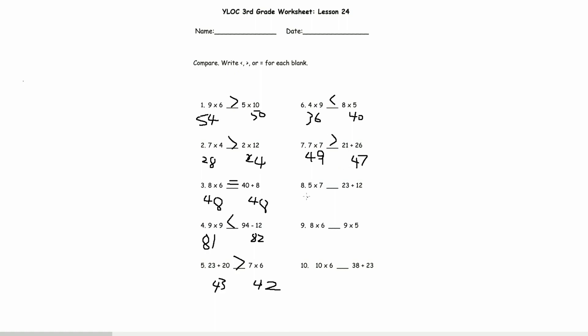5 times 7 is 35. 23 plus 12, 3 plus 2 is 5. And 2 plus 1 is 3. And they are equal.